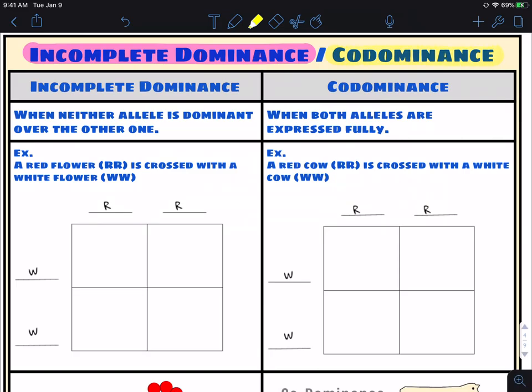Two things that are similar, yet very different from our basic dominant versus recessive Punnett squares that we've been dealing with over the last couple of days. So we're going to take what we should be fairly comfortable with now and twist it a little bit to get some different results.